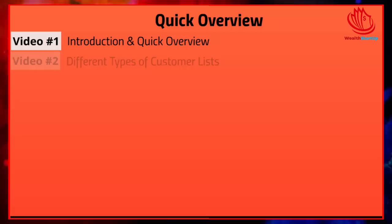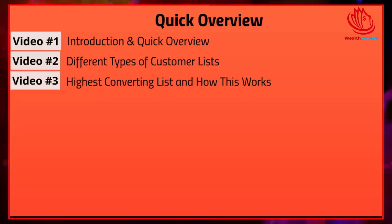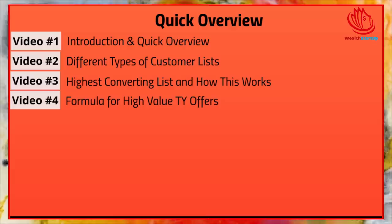Let's talk about a quick overview of the video course so you can get a bird's eye view of what's inside. Video number two, we're going to talk about the different types of customer lists — there are actually two major types, and we'll focus on one particular type. Video number three, we're going to talk about the highest converting list and how it works. Make sure you watch all the videos step-by-step, videos one through nine.